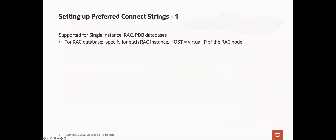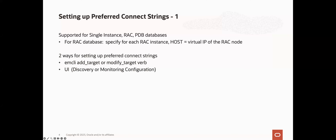To use your connection for OMS to database connections, specify it as an OMS preferred connect string. And to use your connect string for agent to database connections, specify it as an agent preferred connect string. To use preferred connect strings, you have to make sure that EM and the agent monitoring the database are at least on EM 13.5 RU15. You can specify preferred connect strings for single instance databases, RAC databases, and PDBs. For RAC, you should specify the connect string for each RAC instance where the host parameter of the connect string is a virtual IP of the RAC node.